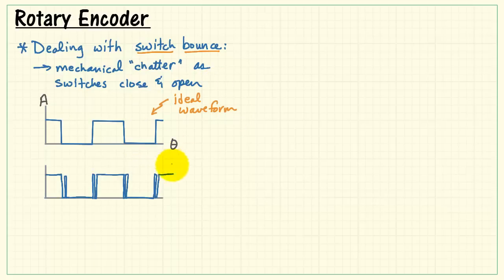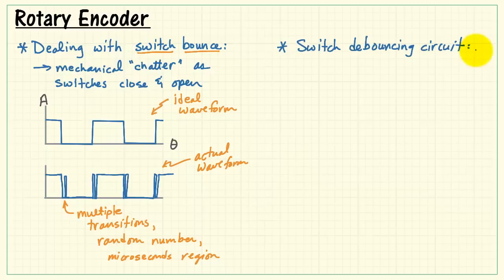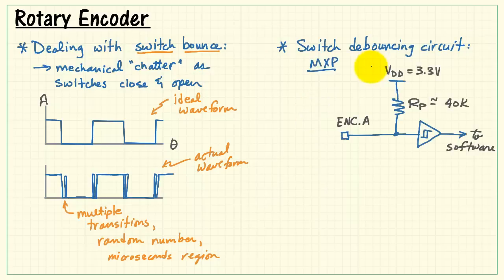Ideally, the waveform would be nice and clean like this, but in reality the actual waveform would look something like this. We have multiple transitions, we have random number, and these tend to be in the microseconds region. We need to ensure that we present a clean waveform to the MIRIO encoder inputs.